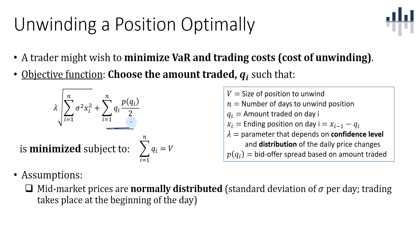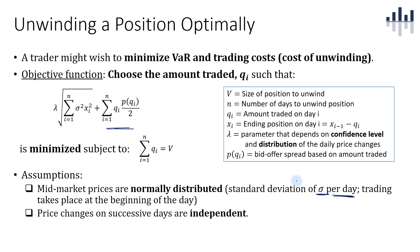Some assumptions: mid-market prices are normally distributed with a standard deviation of sigma per day in currency terms, and trading takes place at the beginning of the day. Price changes on successive days are independent, so in the first term we take the variance of the price changes multiplied by the ending position squared. Since variances are additive, we sum the daily variances, take the square root to get the standard deviation, then multiply by lambda to get the VAR estimate. For a 99% confidence level, lambda equals 2.3236.